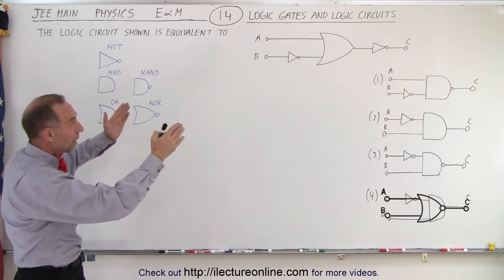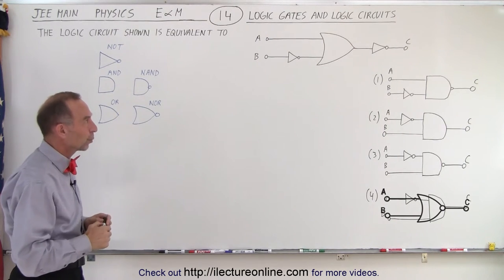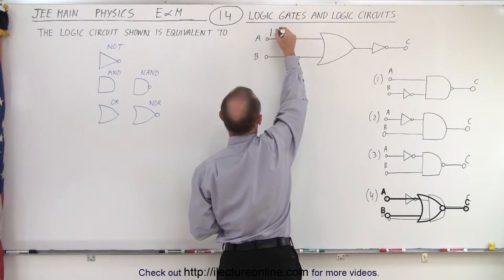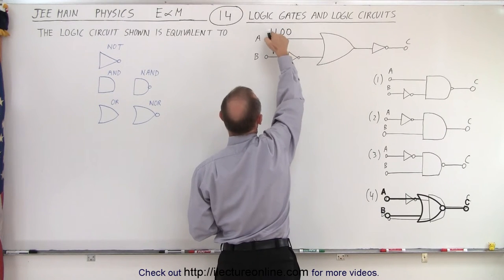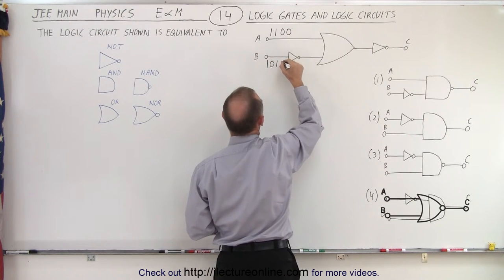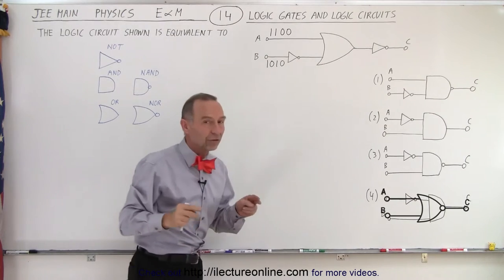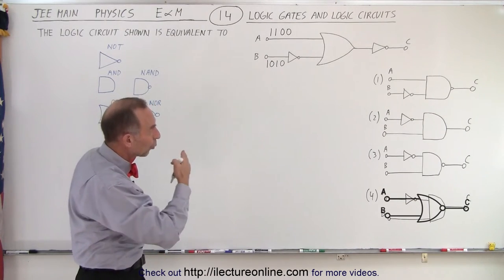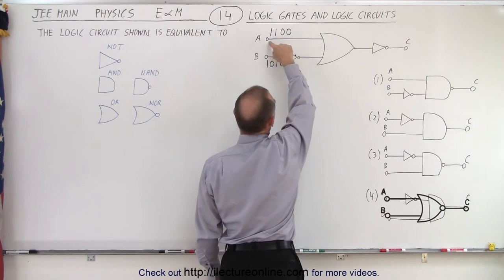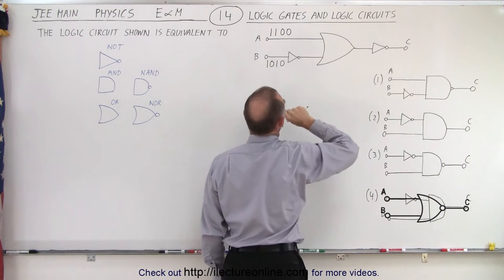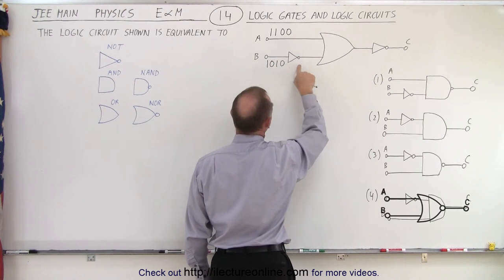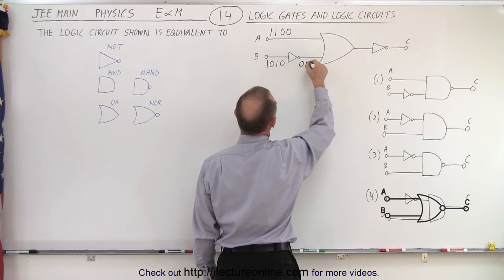Since there are two inputs, we have four combinations: the top input goes 1, 1, 0, 0 and the bottom input goes 1, 0, 1, 0. Now let's work through the original circuit. The top input passes directly to the OR gate. The bottom input goes through a NOT gate, so 1 becomes 0, 0 becomes 1 — giving us 0, 1, 0, 1 on that side.